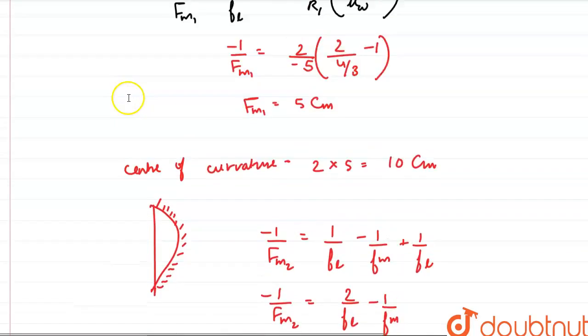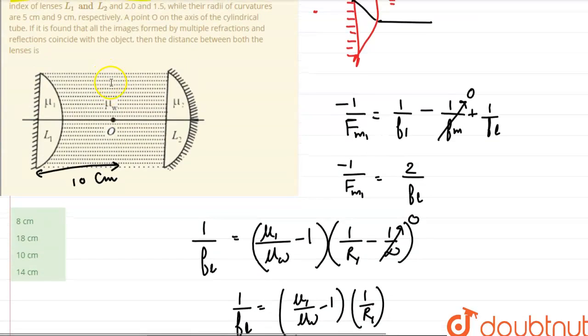Coming back to the diagram: the distance from L1 to the object O is 10 cm, and the distance from O to L2 is 8 cm. So the total distance between both lenses is 10 + 8 = 18 cm, which is our answer.